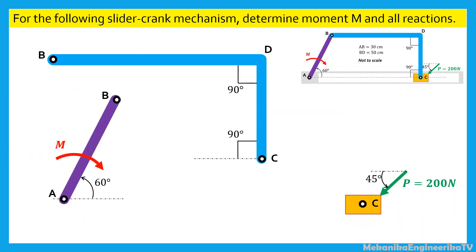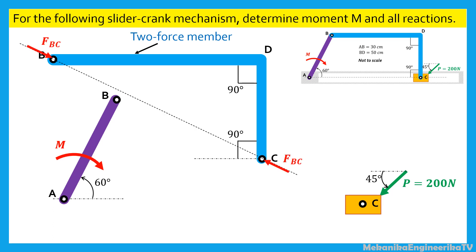The bar BDC does not receive any external force or moment, except for the two reactions in B and C. Thus, the bar BDC can be considered as a two-force member. Consequently, the reactions in B and C have the same direction as the line BC, and should balance each other. Let phi be the angle of the line BC with the horizontal direction. The angle phi will be determined later, using the geometrical parameters of the mechanism.